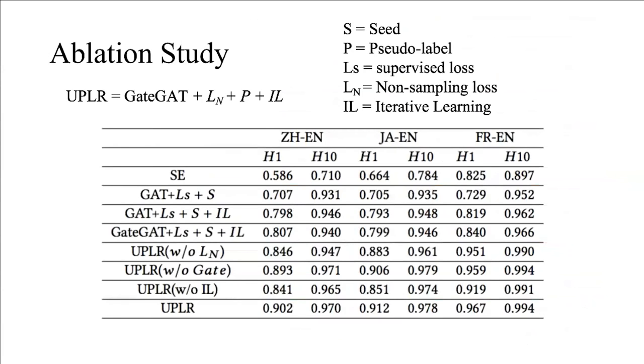In the above experiment, the overall effectiveness of the method is proved. In this section, we demonstrate the validity of each component of UPLR. UPLR has two novel designs: Gate and Areas. As shown in the table, the performance of both designs is greatly improved. This ablation experiment shows that the design is meaningful and has improved significantly.